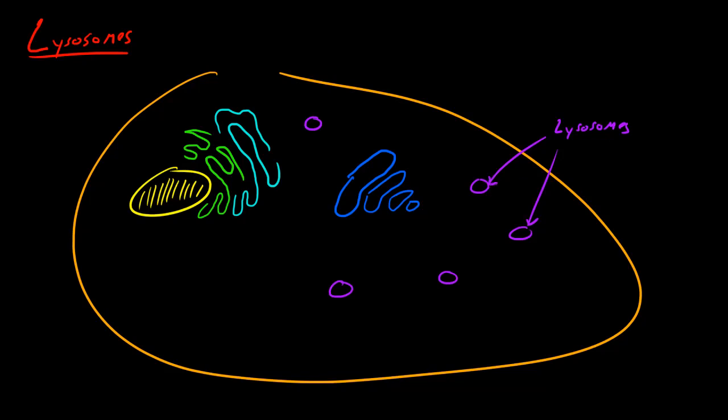Now inside your lysosomes are digestive enzymes and what these enzymes do is they break up harmful material to the cell. So say we had something harmful right here. Maybe it was just a molecule that your cell didn't need or maybe it was a molecule that might be hurting an organelle. Well what these lysosomes would do is they would surround this molecule right here and begin to break it up into smaller pieces.